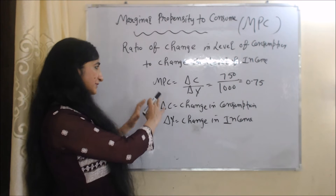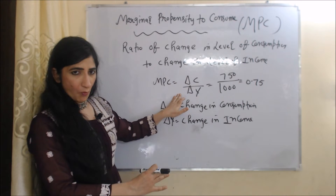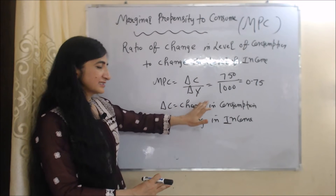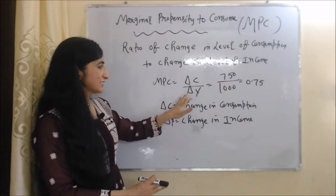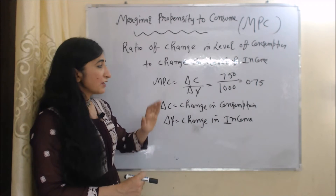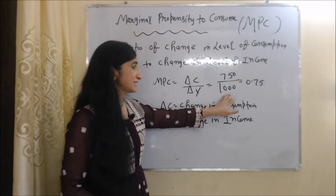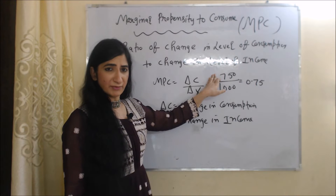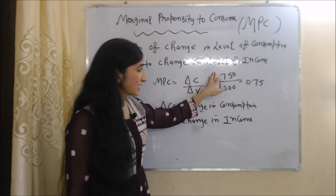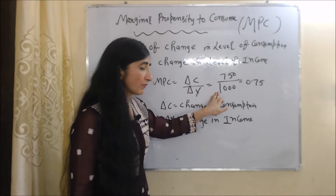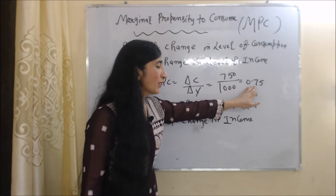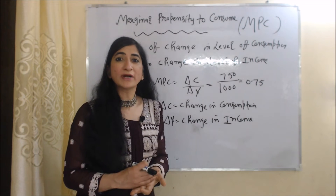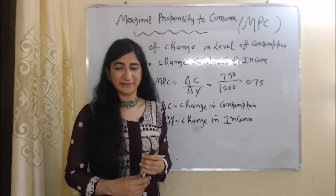The formula of MPC is delta C over delta Y, where delta C is change in consumption and delta Y is change in income. For example, if the change in income is 1,000 and the change in consumption is 750, then 750 over 1,000 equals 0.75, and 0.75 is our MPC.